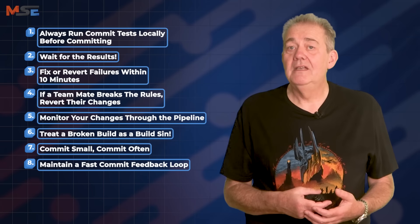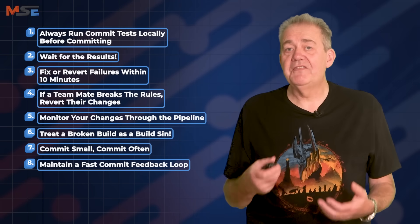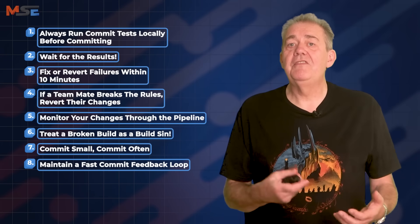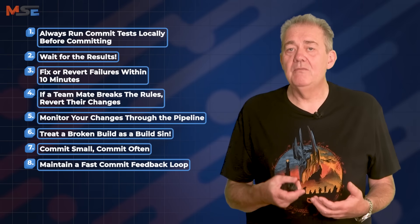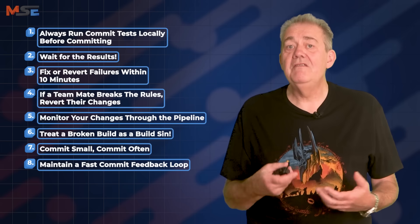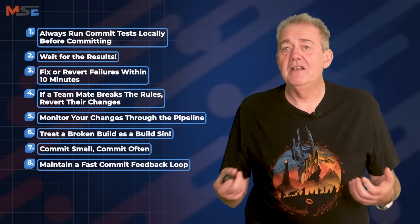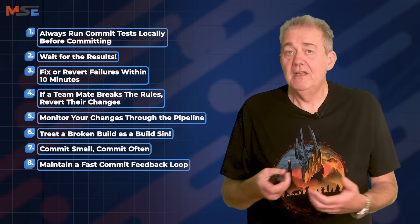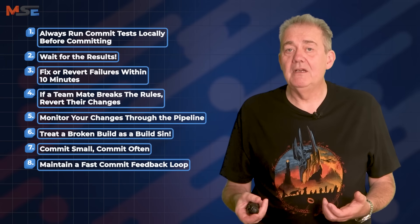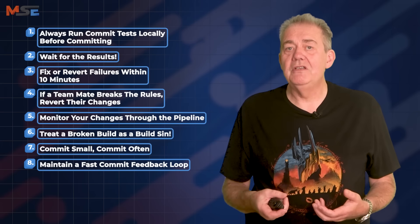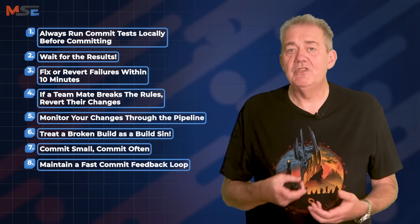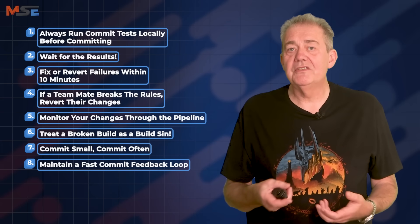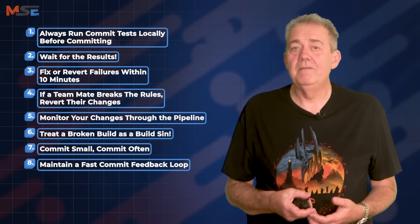Rule eight: maintain a fast commit feedback loop. Aim for feedback on commits within five minutes and the entire transit through the deployment pipeline within an hour. This speed allows you to catch problems early, reducing the costs and complexity of fixing them.